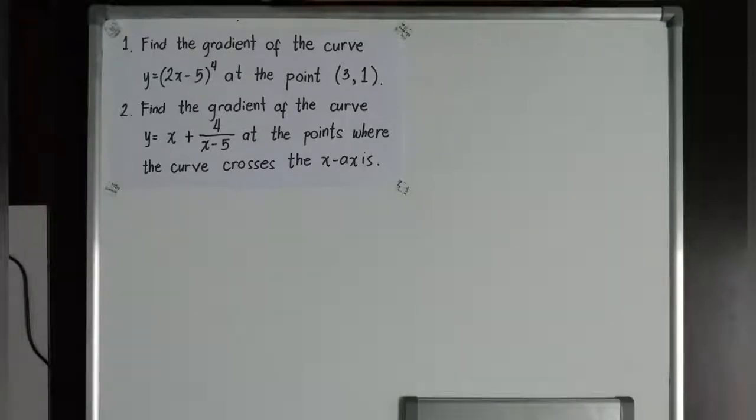There are certain problems that might be involving chain rule just like some other concepts in mathematics. Here are the problems. Number 1, find the gradient of the curve y equals the quantity 2x minus 5 to the power of 4 at the point (3, 1). Remember, when we say gradient of a curve,